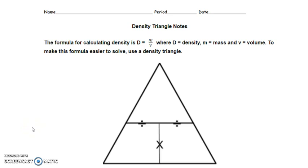Let's take a look at the paper handed out by your teacher. It's called Density Triangle Notes. The formula for calculating density is D equals M over V. D stands for density, M stands for mass, and V stands for volume. M over V is like a fraction — it means mass divided by volume.